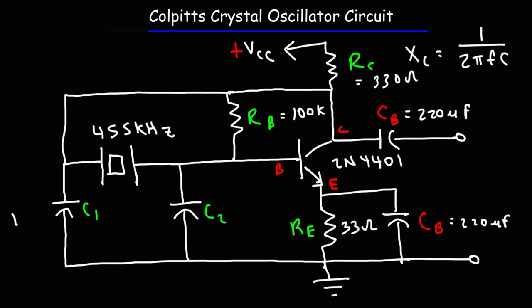For C1 and C2: during one specific trial, I used a 1.7 nanofarad capacitor for C1 and a 240 picofarad capacitor for C2. The output frequency measured was 454.5 kilohertz. C1 and C2 do affect the operating frequency of the circuit, but not by much. For the most part, the frequency is close to 455 kilohertz — very close to the ceramic oscillator frequency.